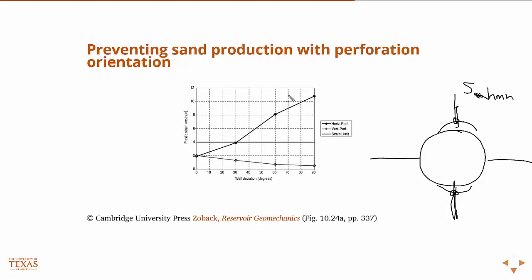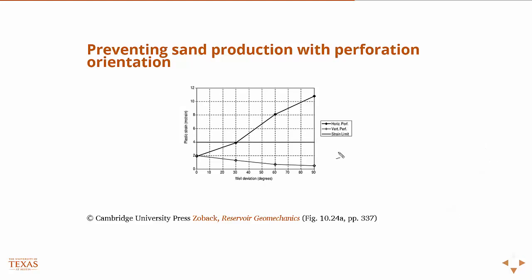These are results from numerical simulation. This is plastic strain — that measure I talked about — and this horizontal line here represents 4% plastic strain. The reason it's there is that it's the acceptable limit; anything above that you'd be expected to produce sand.